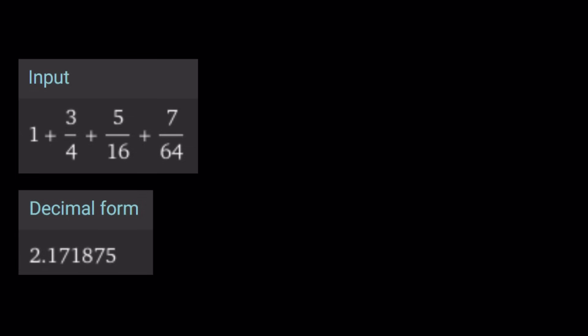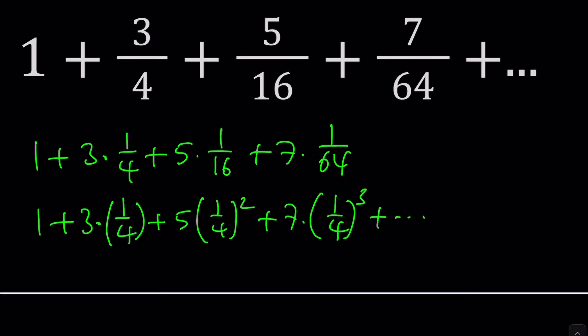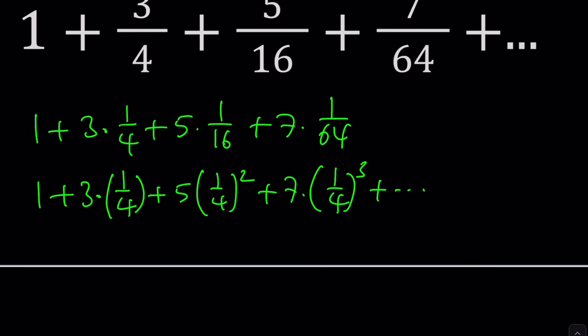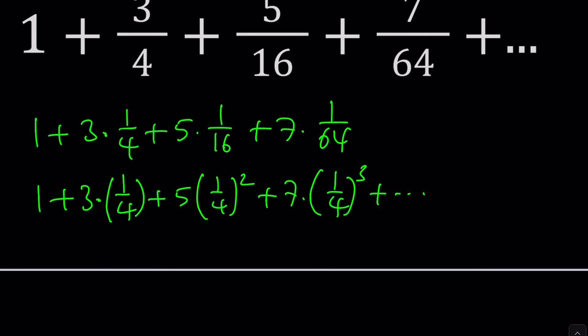I just added the first four numbers, and I get the following number. Does this mean anything? Because all the terms are positive, you're expecting to get something larger than this. But how much larger? That's a good question.